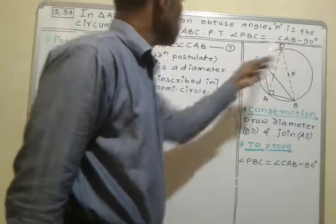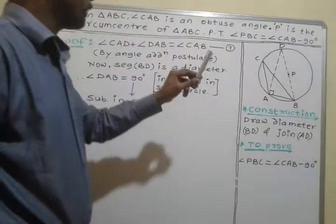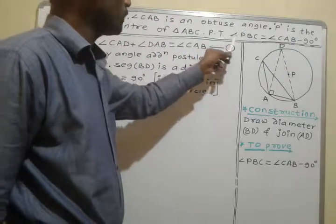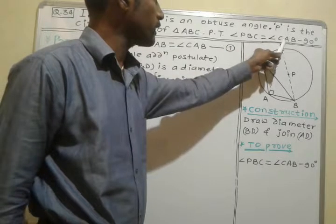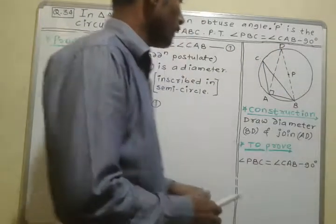Point P is the circumcenter of triangle ABC. Then prove that angle PBC is equal to angle CAB minus 90 degrees.